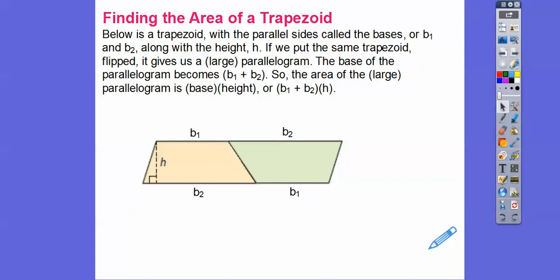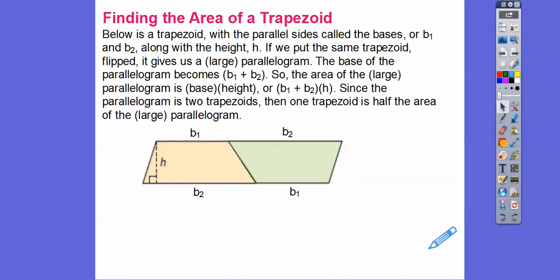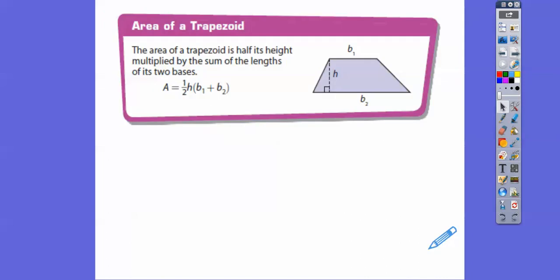If we want the area of just one of the trapezoids — this is two trapezoids — and if this is the area for the whole parallelogram, then for one trapezoid we're going to take half of it. So the area of a trapezoid is half the sum of the two bases times the height. It's just half the area of the whole parallelogram.